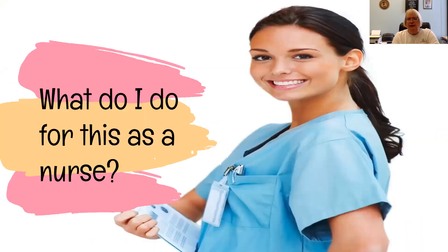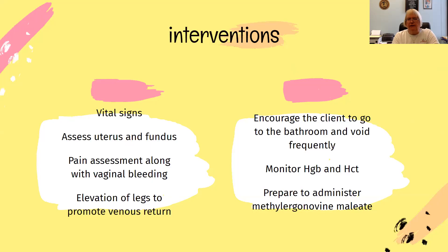As a nurse, I take their vital signs, assess the uterus and their fundus, and do a pain assessment along with the vaginal bleeding. I elevate their legs to promote venous return, encourage the client to void frequently, and I definitely monitor that hemoglobin and hematocrit.